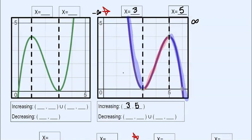And then it's decreasing everywhere else. So this side would be from negative infinity to three. And then the other interval, this one, is from five to positive infinity.